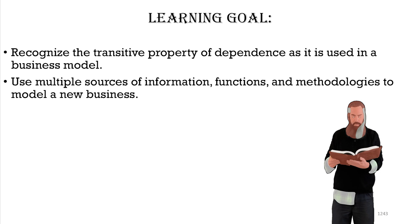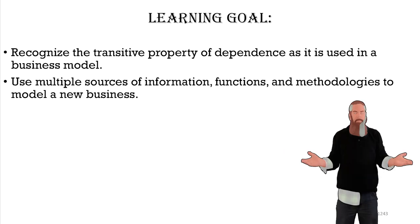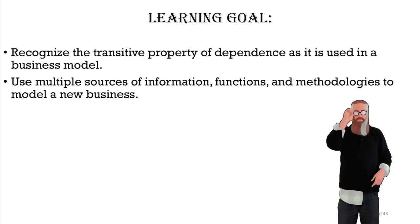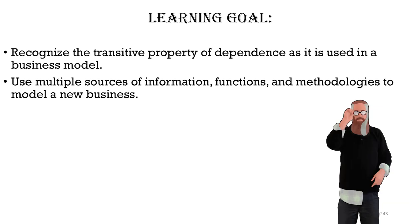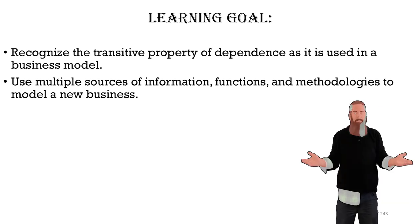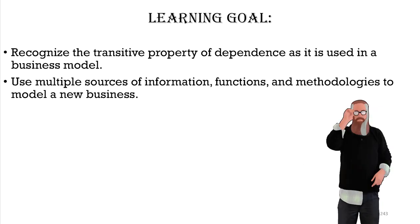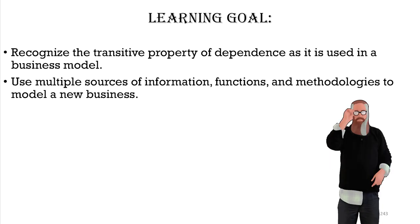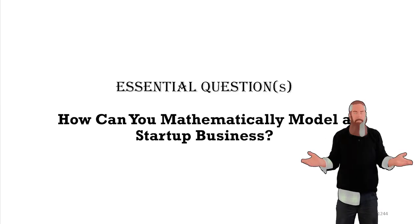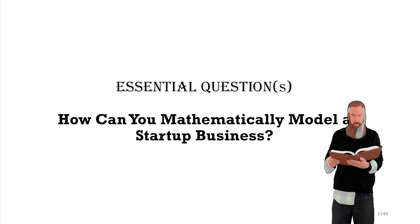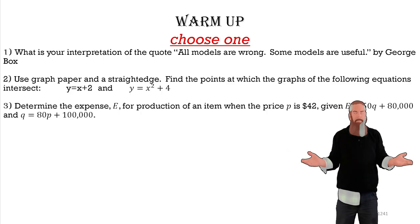In this lesson, we're going to recognize the transitive property of dependence as it is used as a business model, and we're going to use multiple sources of information, functions, and methodologies to model a business. All to answer the question, how can you mathematically model a startup business?